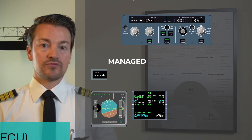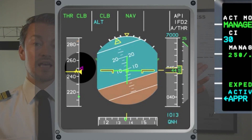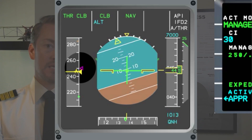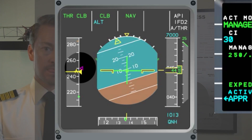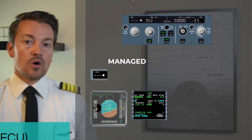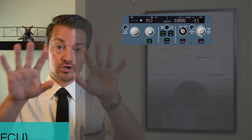There are two more ways to identify managed mode. Looking at the display, we can see that the speed is targeted by a magenta target on the speed tape — magenta means managed. Looking at the top of the PFD display in the third column, we can see 'NAV', meaning the aircraft is navigating itself. And on the MCDU climb page, the left column shows 'managed speed' on the third line and 'managed' on the first line as well.